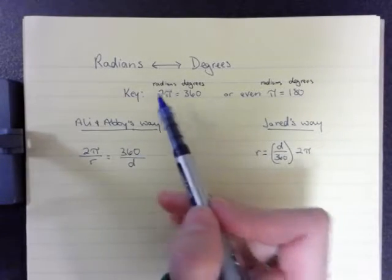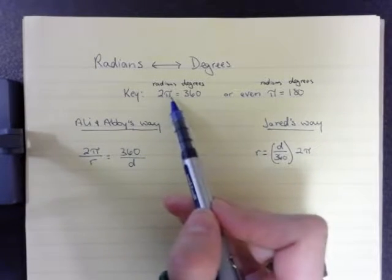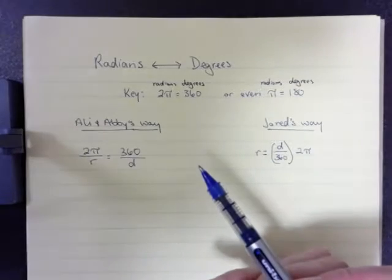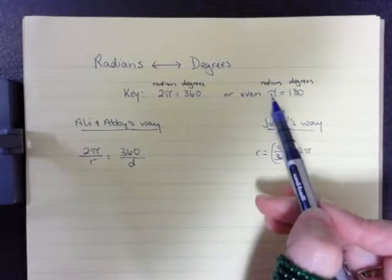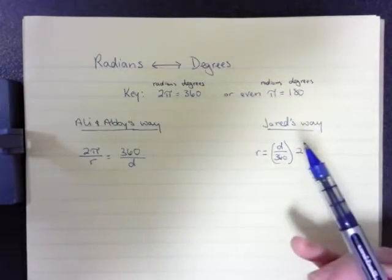So the key thing that we have to remember is that 2 pi radians equals 360 degrees. I could even simplify that by saying that pi radians equals 180 degrees.